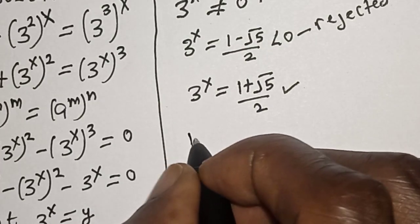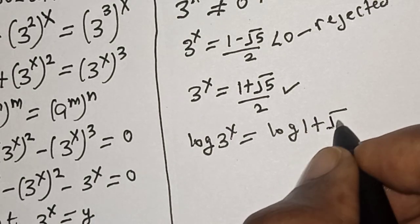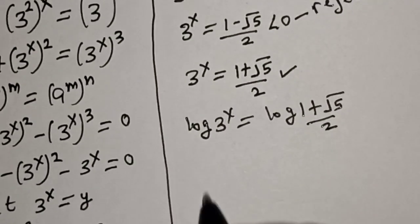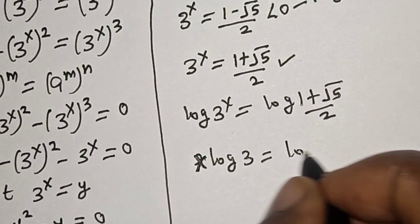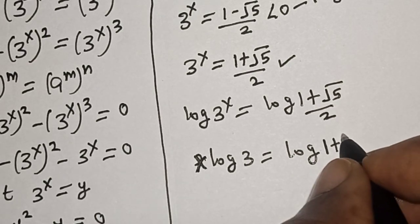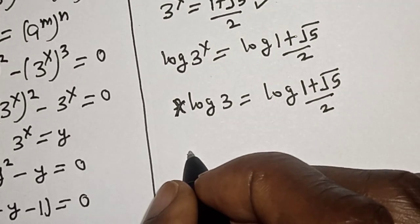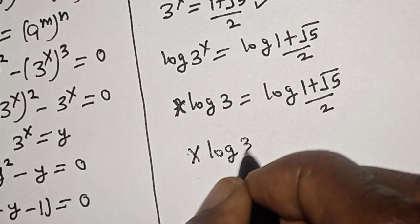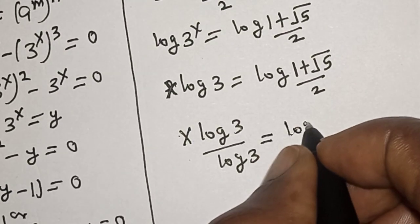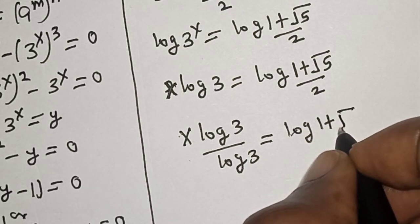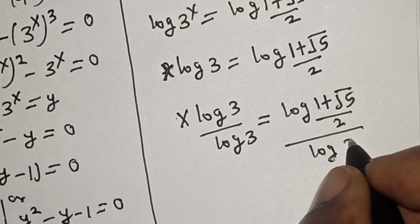Let's take the log of both sides: log of 3 raised to power s equals log of 1 plus root 5 over 2. Then s times log 3 equals log of 1 plus root 5 over 2. Dividing both sides by log 3: s equals log of 1 plus root 5 over 2, divided by log 3.